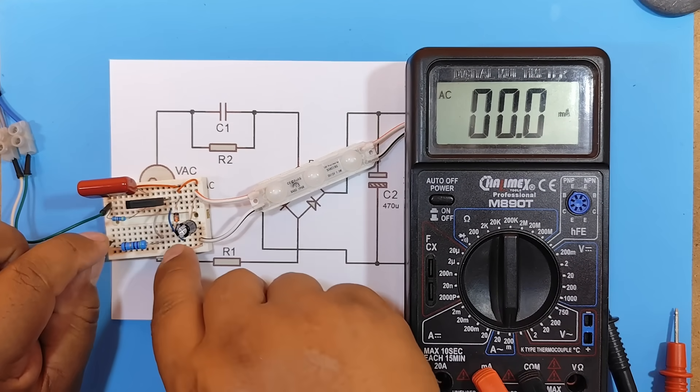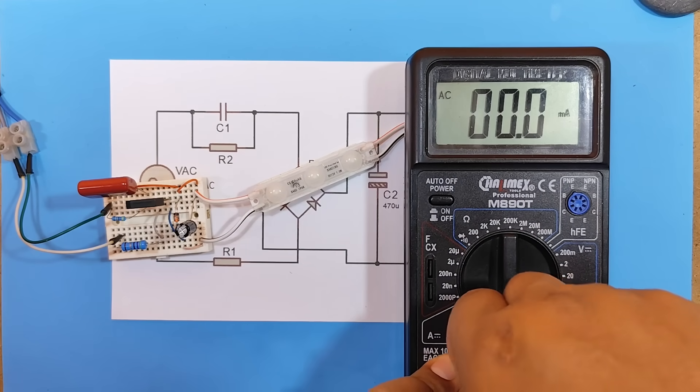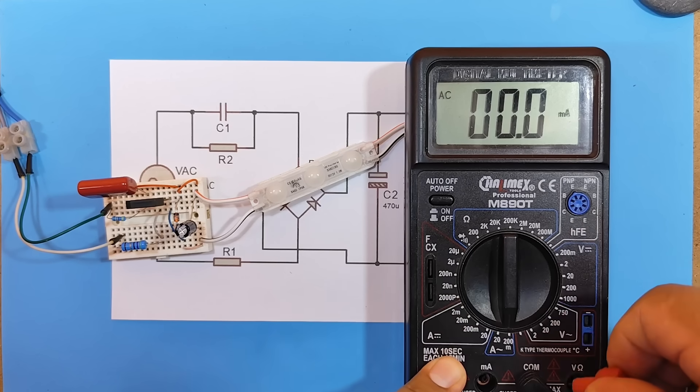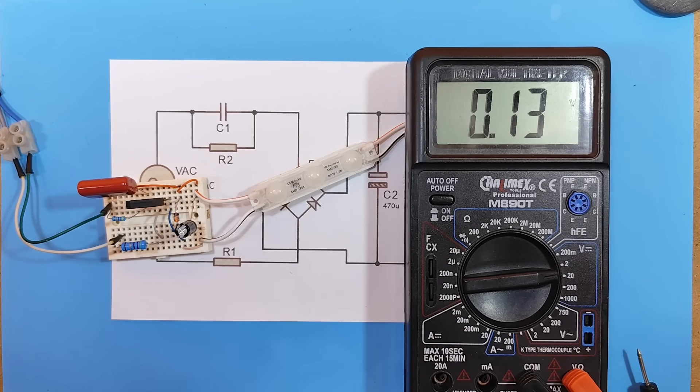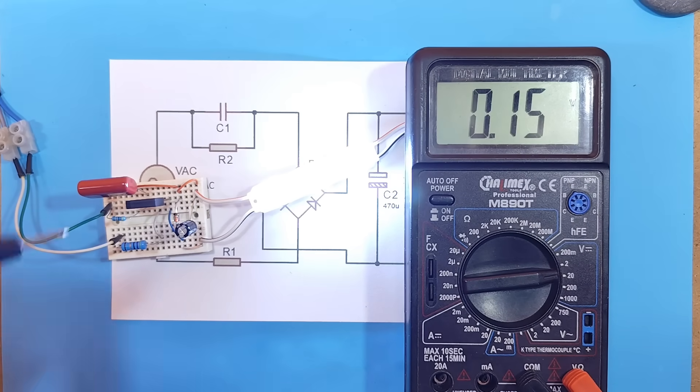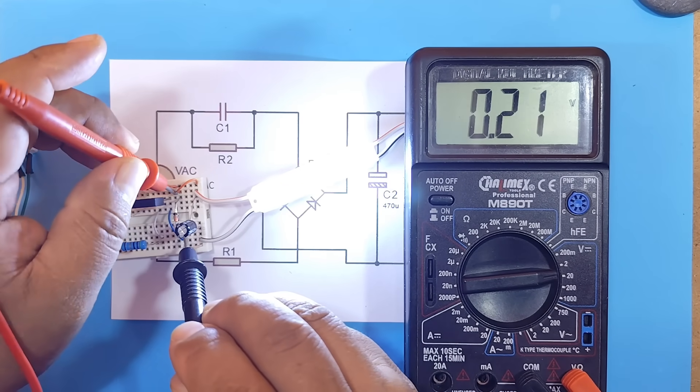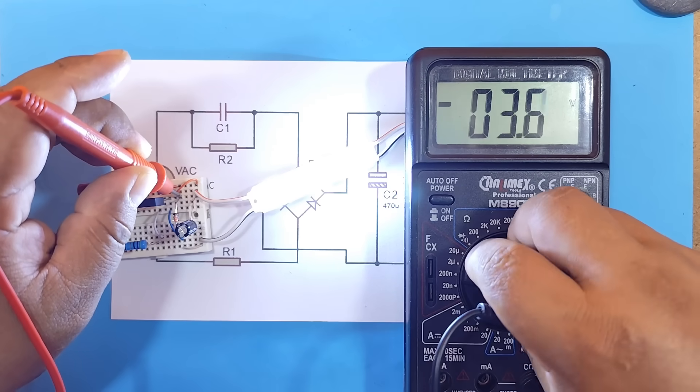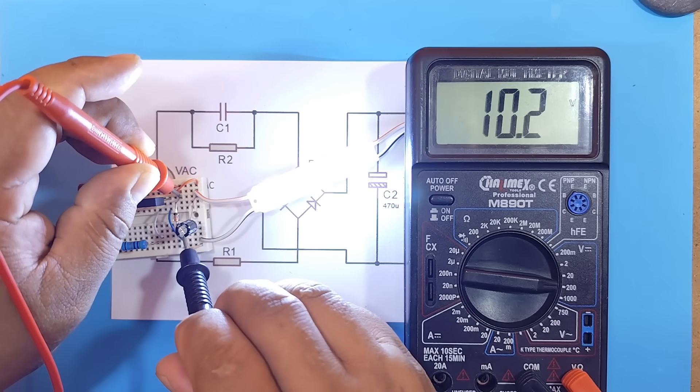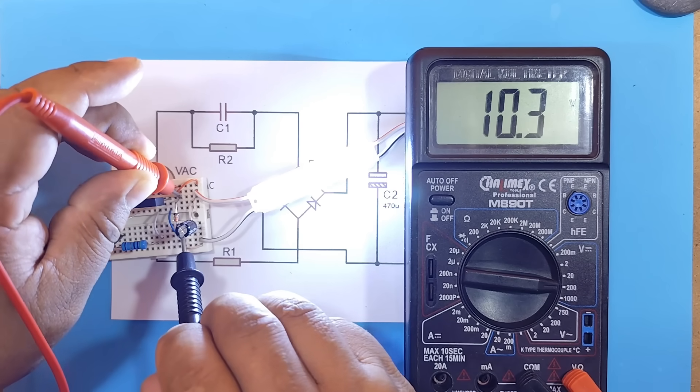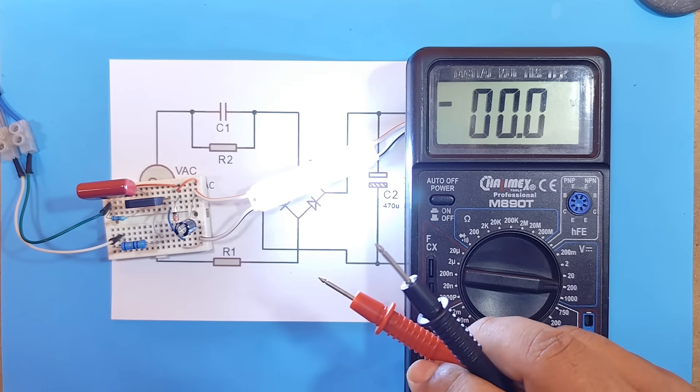Finally, let's measure the voltage across the Zener diode, which should be approximately 10 volts. We have 10 volts, which means the Zener diode is working correctly without overheating.